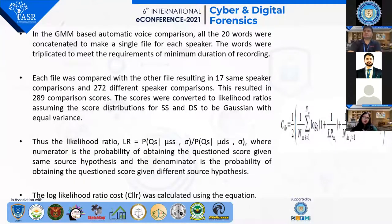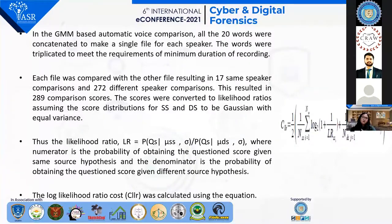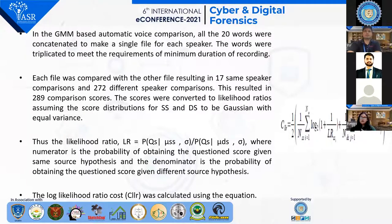For the automatic speaker comparison, a Gaussian Mixture Model (GMM) based automatic comparison was used, where all 20 words were concatenated into a single file for each speaker. The words were triplicated to meet the minimum duration requirements. Each file was then compared with other files, resulting in 17 same-speaker comparisons (one questioned speaker and 16 male volunteers) and 272 different-speaker comparisons, giving 289 total comparison scores. The scores were then converted to likelihood ratios assuming the score distribution for same-speaker and different-speaker comparisons to be normal with equal variance.